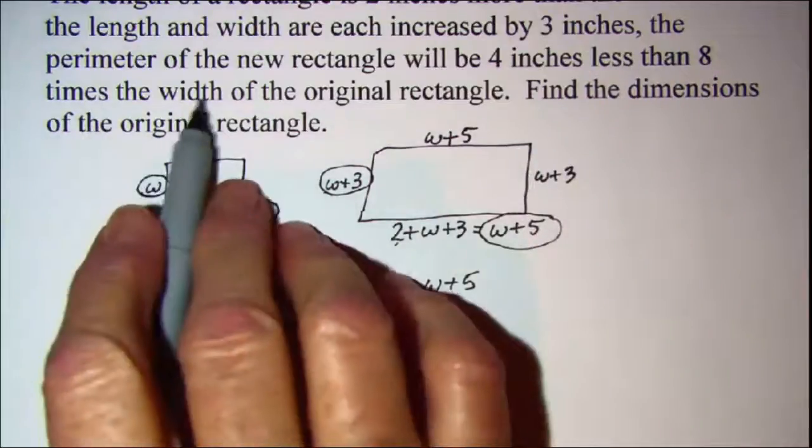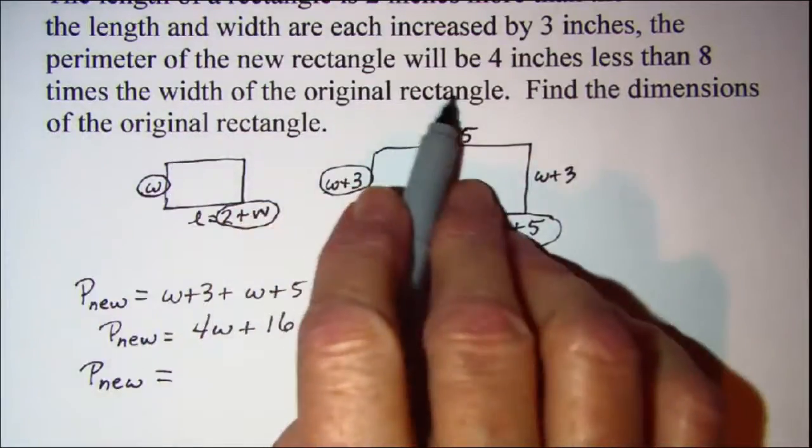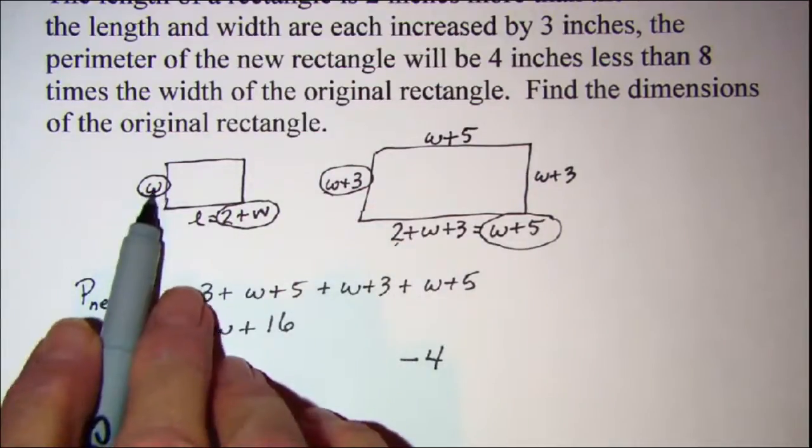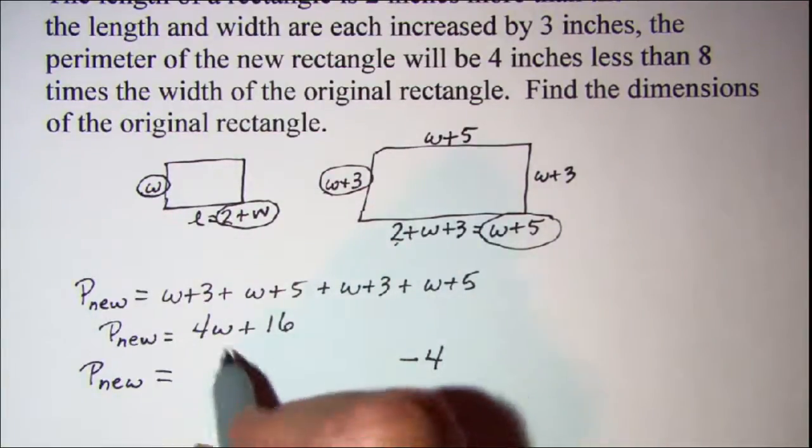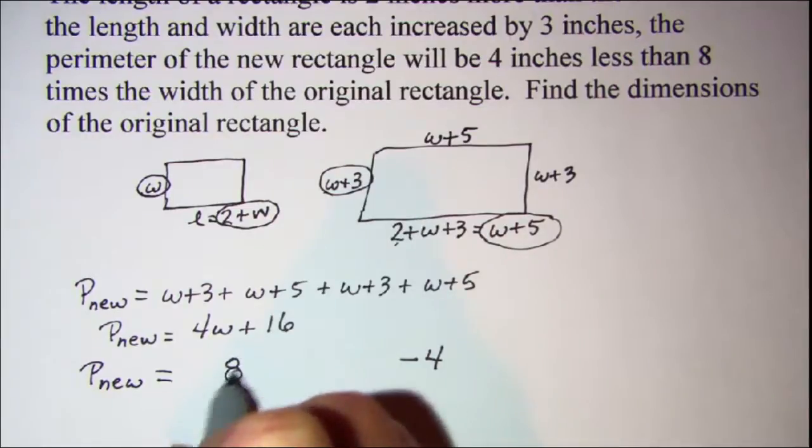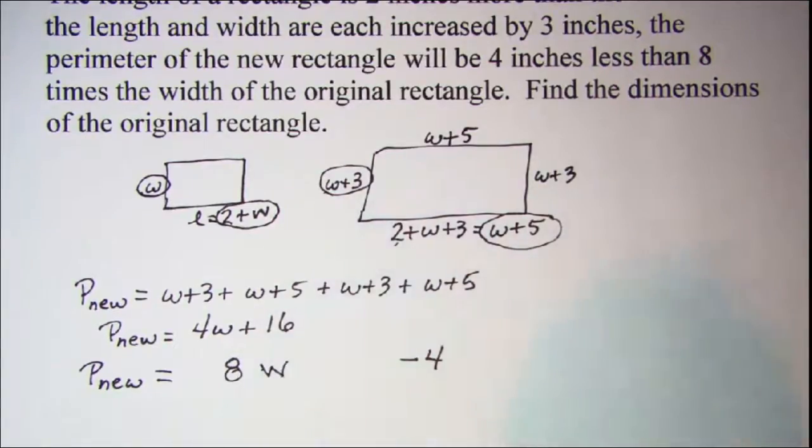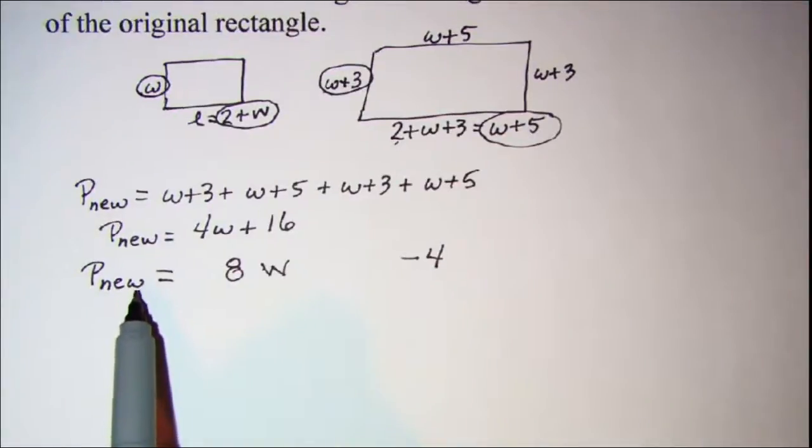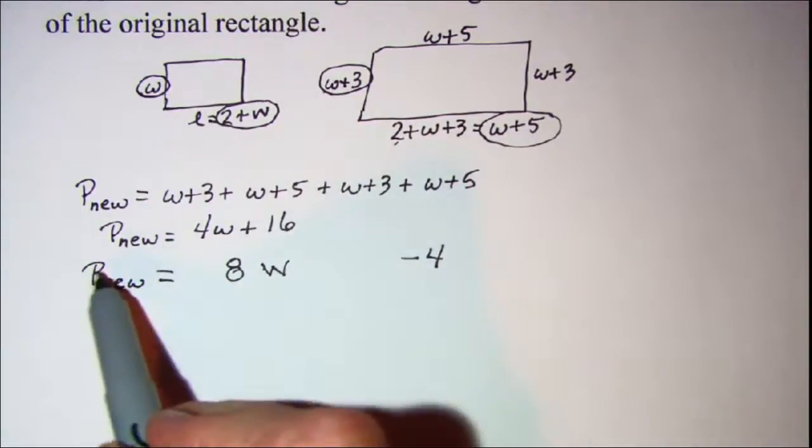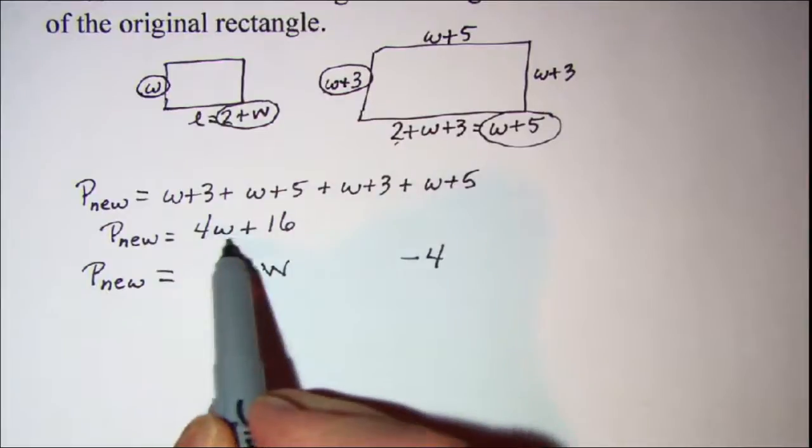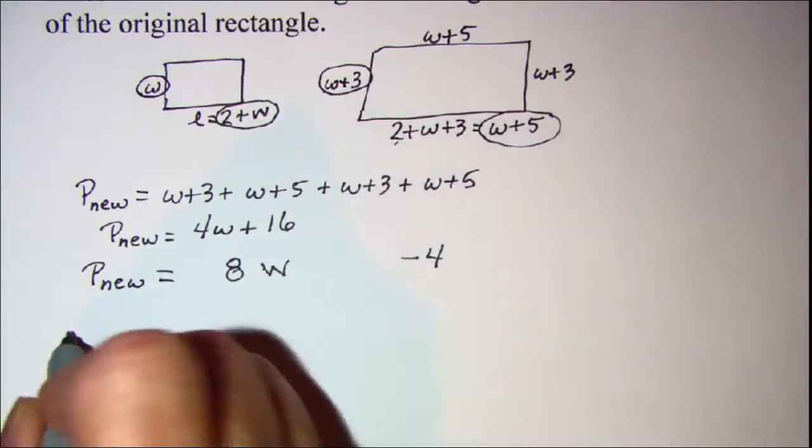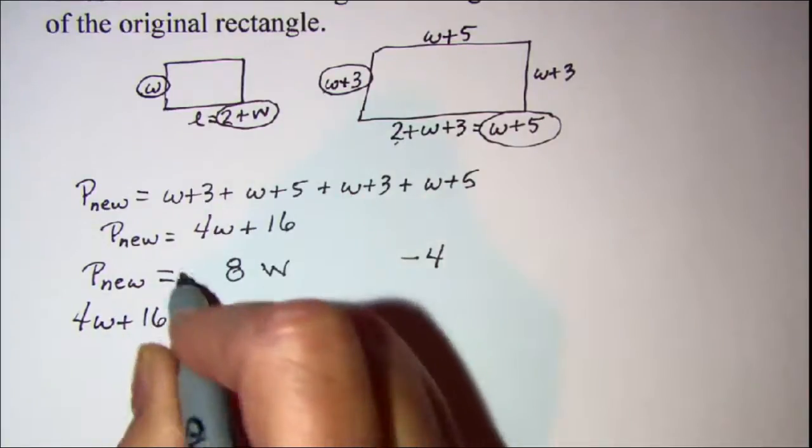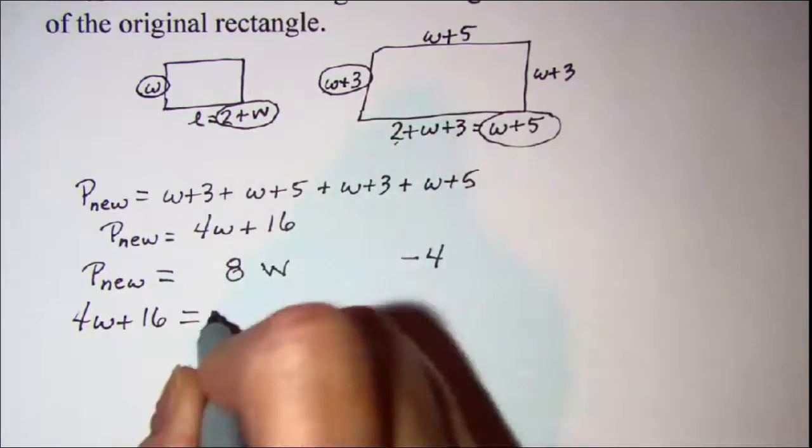8 times the width of the original rectangle. Now here's my original rectangle and this is my width. So I want 8 times the width of the original rectangle. Now I can go ahead and sub in my perimeter of the new—we said was 4W plus 16—and that equals 8W minus 4.